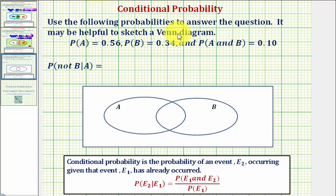We want to use the following probabilities to answer the question. It may be helpful to sketch a Venn diagram, which we will do.